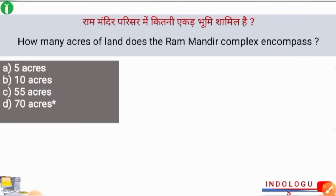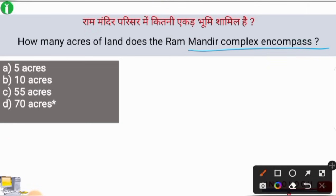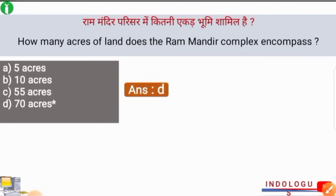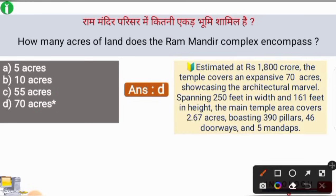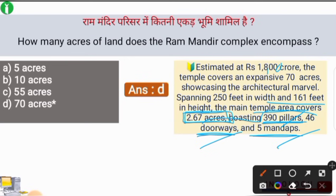How many acres of land does the Ram Mandir complex encompass? The correct answer is option number D — the Ram Mandir complex encompasses an area of 70 acres. The estimated cost is 18,000 crores. The temple covers 70 acres, spanning 250 feet in width, 161 feet in height. The main temple area covers 2.67 acres, boasting 390 pillars, 46 doorways, and 5 mandaps. You have to remember this.